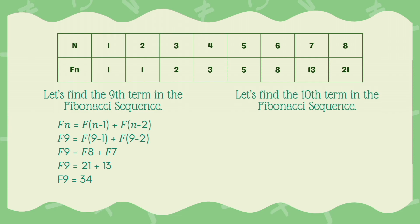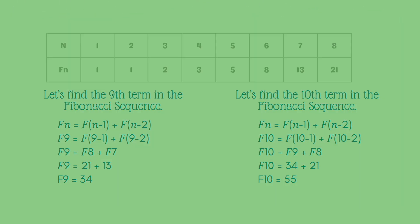Next, let's find the 10th term in the Fibonacci sequence. To find it, we're just going to add the value of F9 plus F8, which is 34 and 21, and then we get 55. Then that is the 10th term in the Fibonacci sequence.